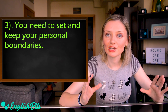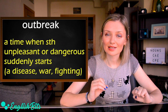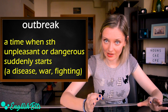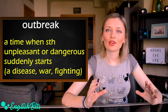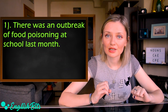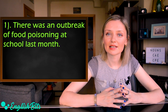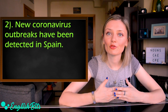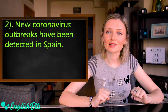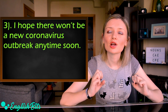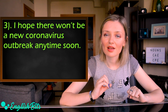Now let's move on to our C2 nouns. Number six is 'outbreak' — a time when something unpleasant or dangerous suddenly starts, such as a disease, war, or fighting. Examples: There was an outbreak of food poisoning at school last month. New coronavirus outbreaks have been detected in Spain. I hope there won't be a new coronavirus outbreak anytime soon.